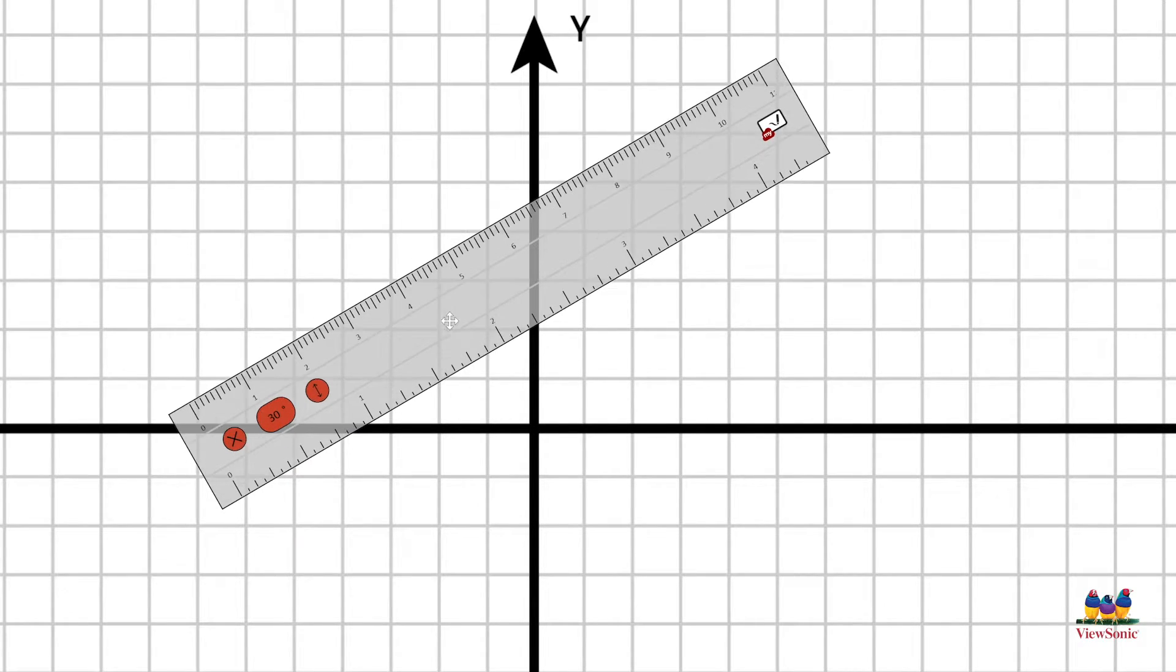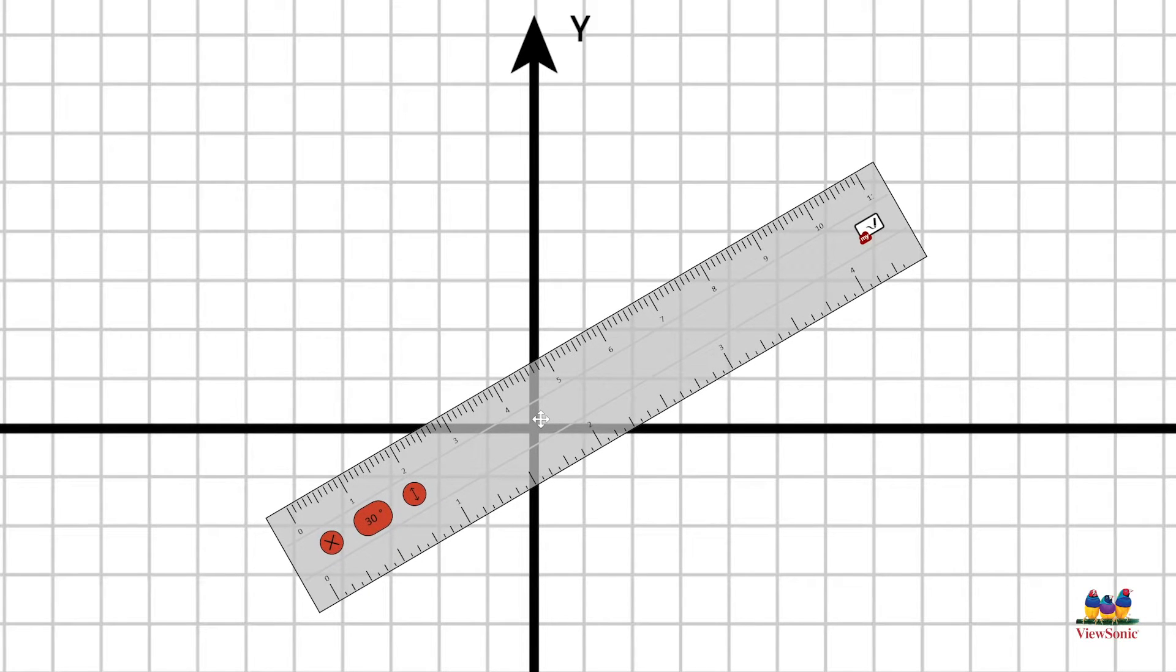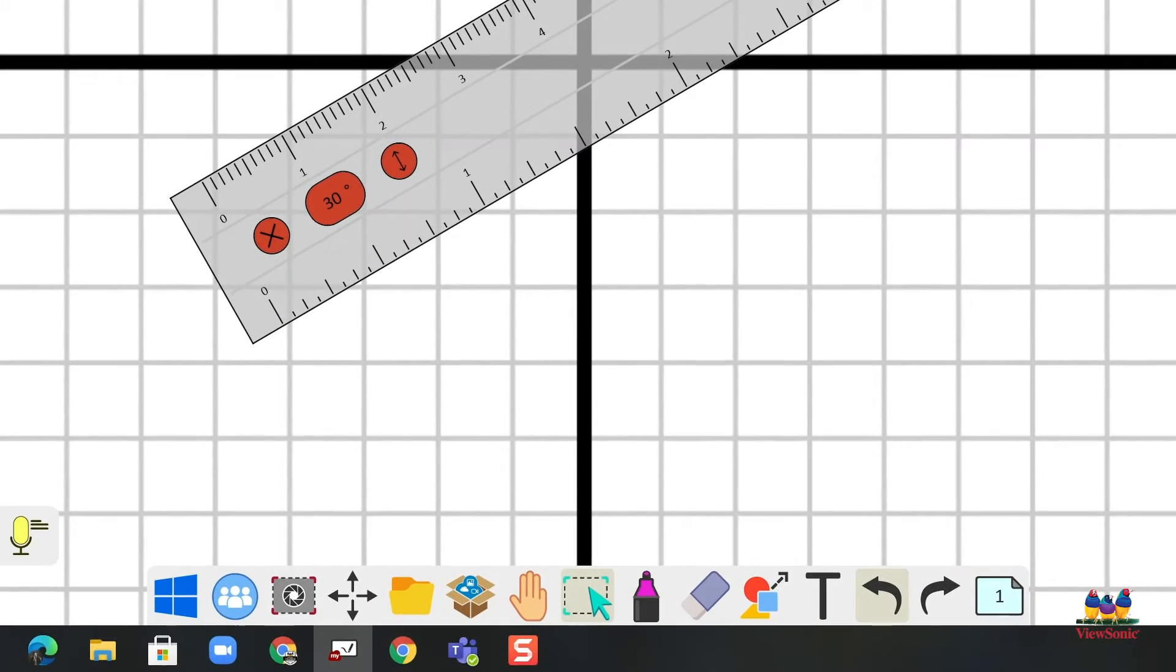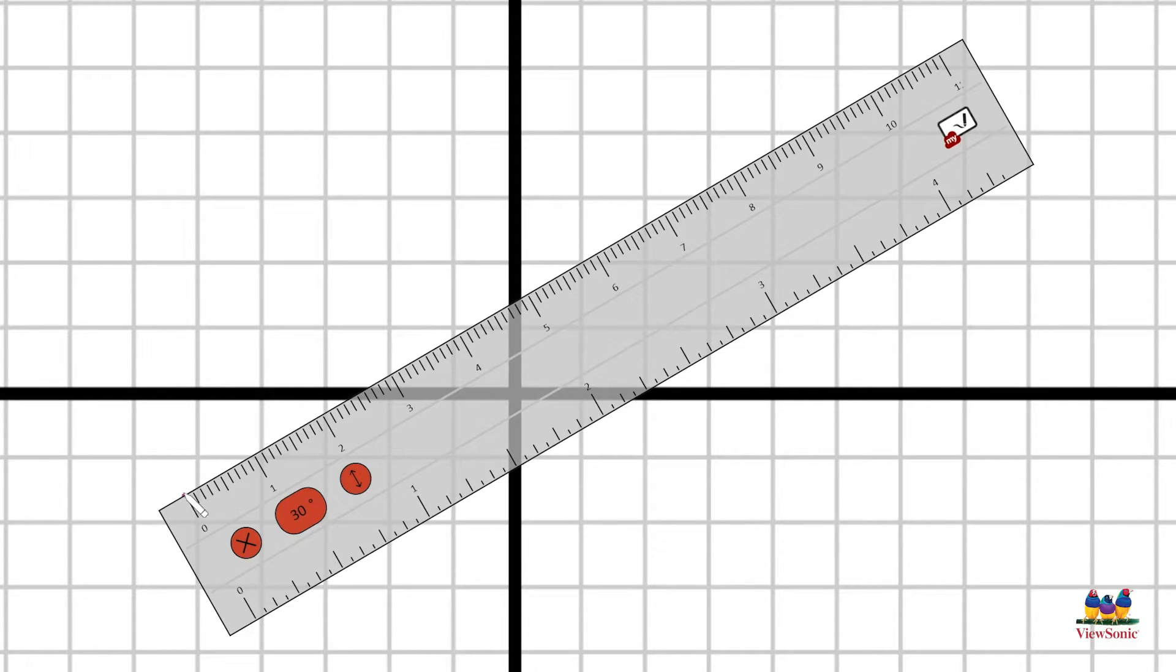Now in order to draw a line along your ruler, first place it where you want it to be, then choose your pen tool from the main toolbar. Once you have your pen tool, just trace along the edge of the ruler and it will draw a straight line.